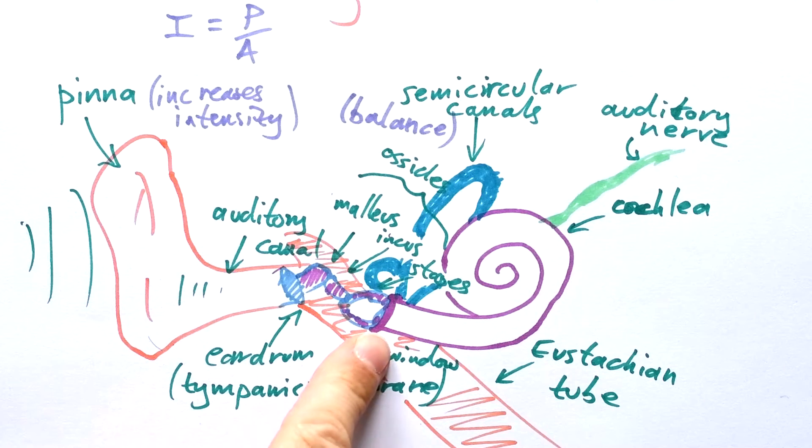Now I should have drawn the oval window a lot smaller than the eardrum. If the oval window is smaller than the eardrum, then that means that again the intensity is increased.